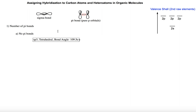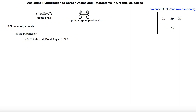So once again, how do we identify SP3 hybridized atoms? SP3 hybridized atoms are atoms having no pi bonds, meaning they will all have four single bonds — sigma bonds and lone pairs, but no pi bonds.